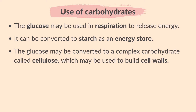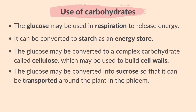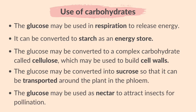Glucose may be converted to a complex carbohydrate called cellulose, which may be used to build cell walls. Glucose may be converted into sucrose so that it can be transported around the plant in the phloem. The sucrose will be distributed to all parts of the plant that do not photosynthesize. The glucose may also be used as nectar to attract insects for pollination.